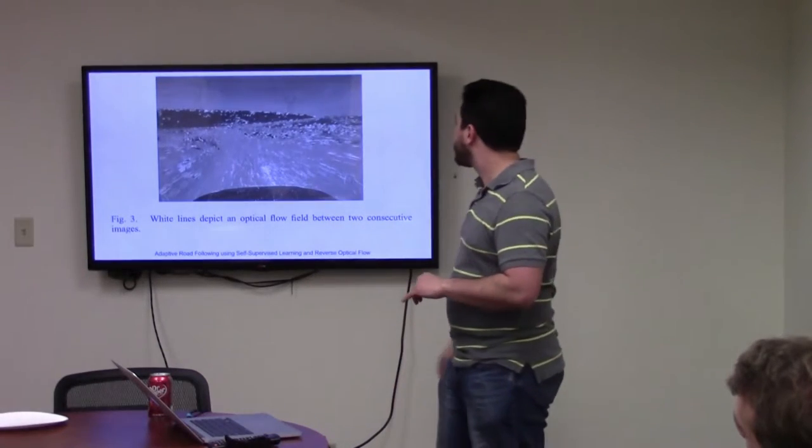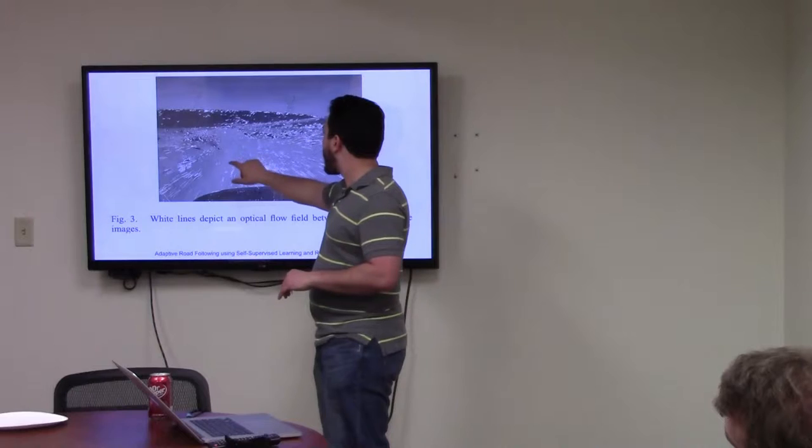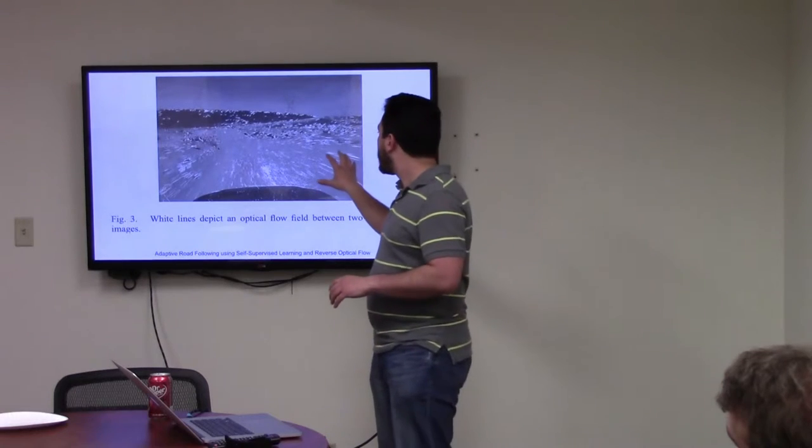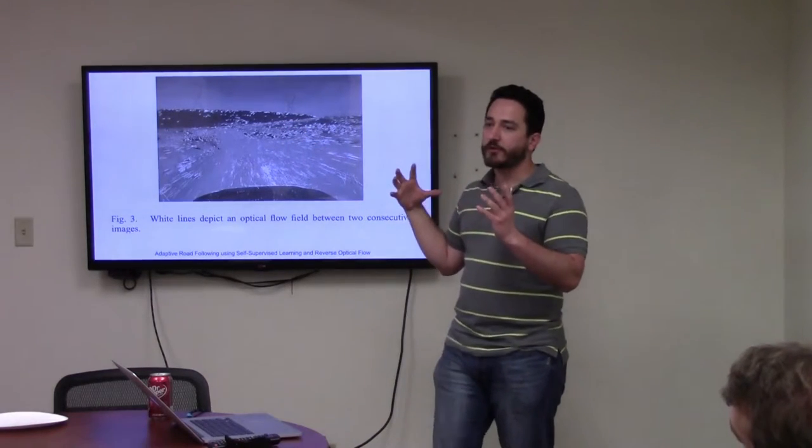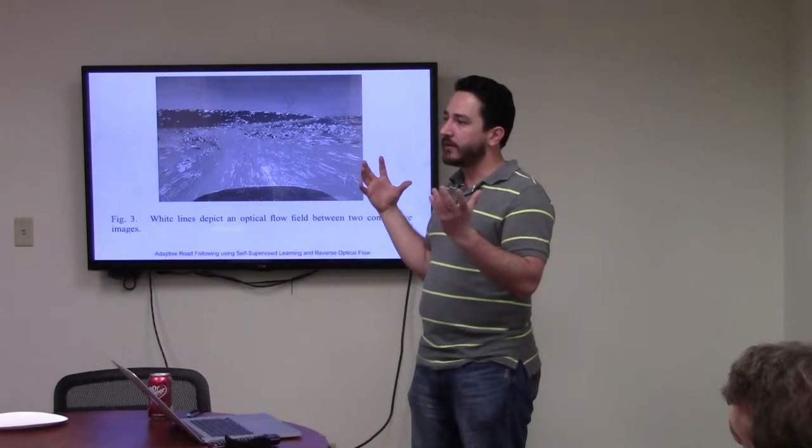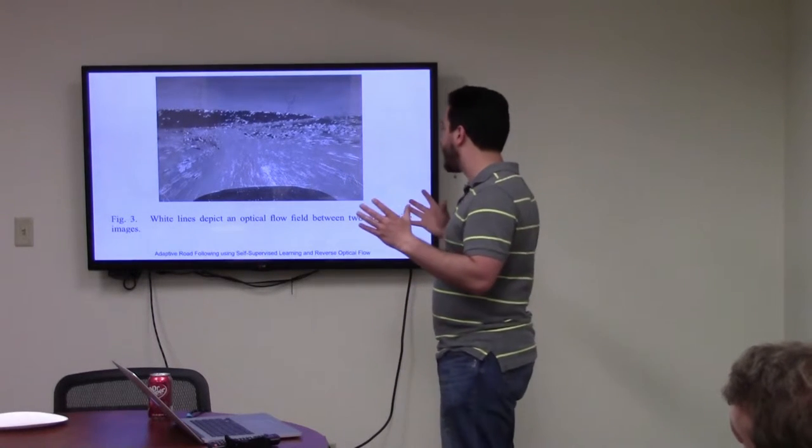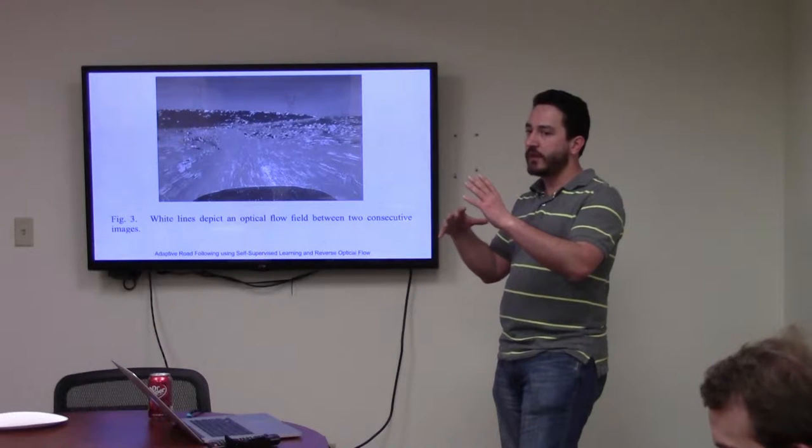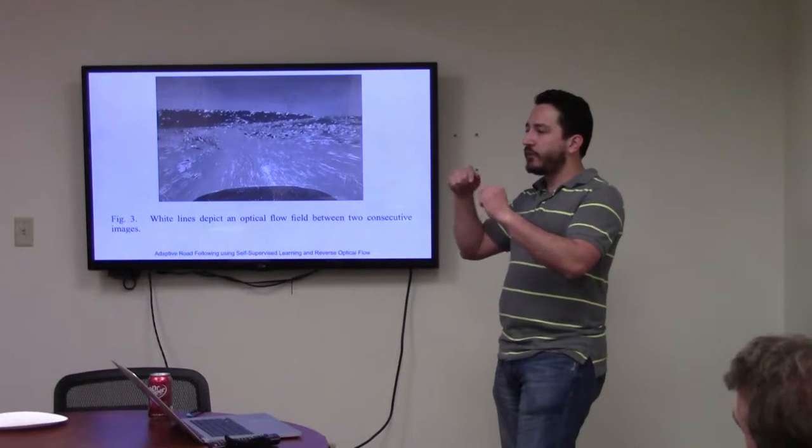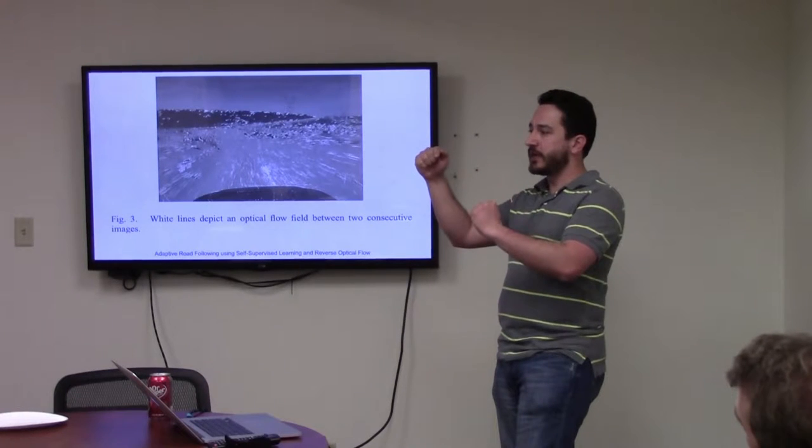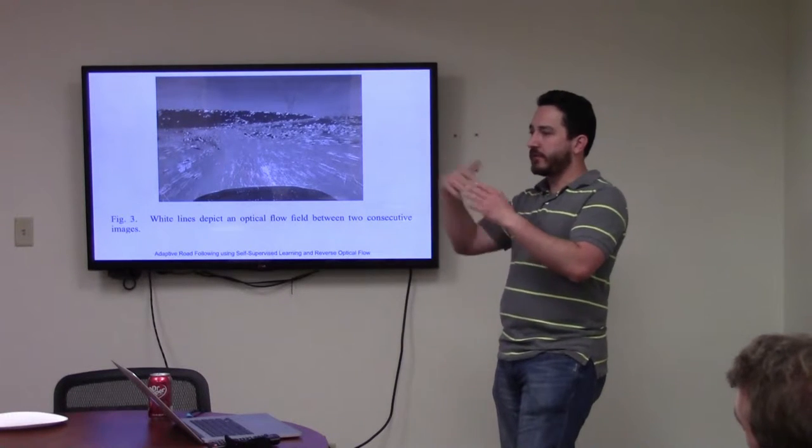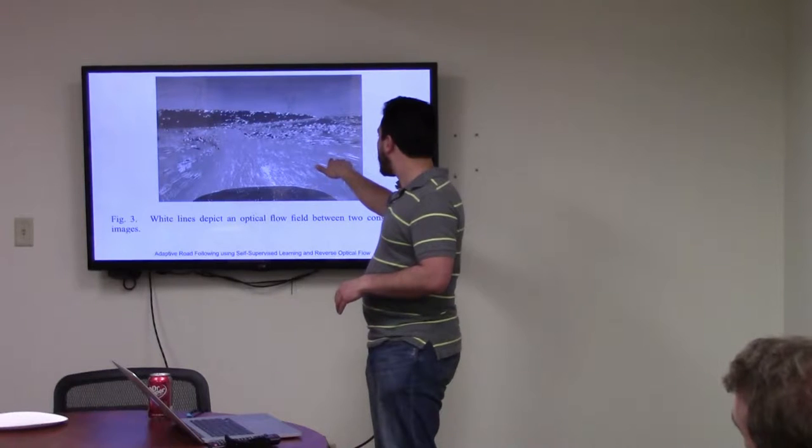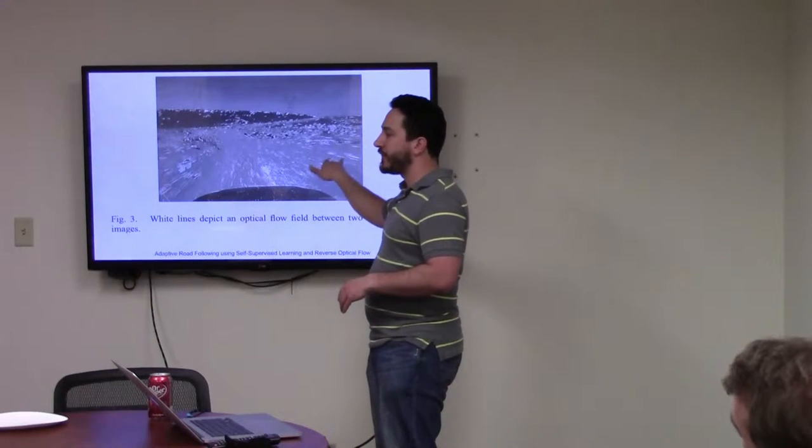So the first thing it would do is it would actually, all of this stuff was done in grayscale. And so it would take these images and it would do feature detection based off of them. You would take one of these grayscale pictures and there's a Shi-Tomasi feature detection algorithm that you could run, that basically is just looking for edges along the image.